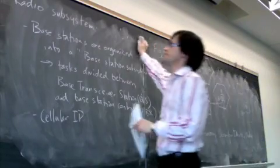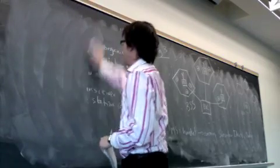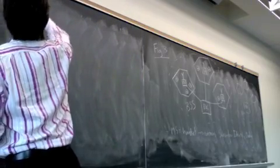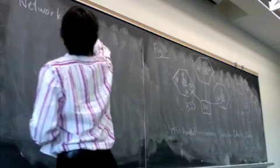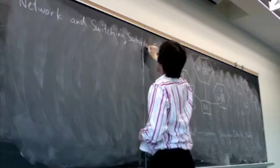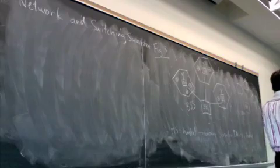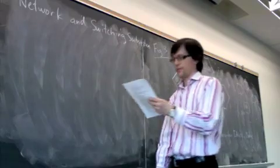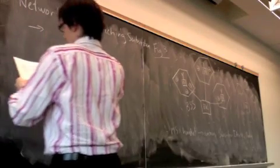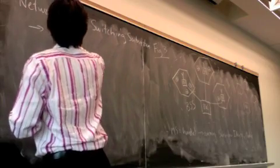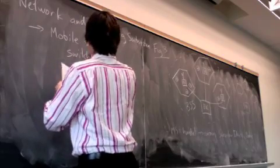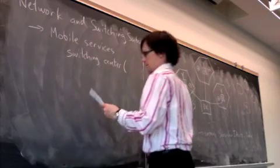Okay, the network and switching subsystem. The network and switching subsystem is really what makes GSM a system. This consists of three significant components. First we have the mobile services switching center, which is called the MSC.